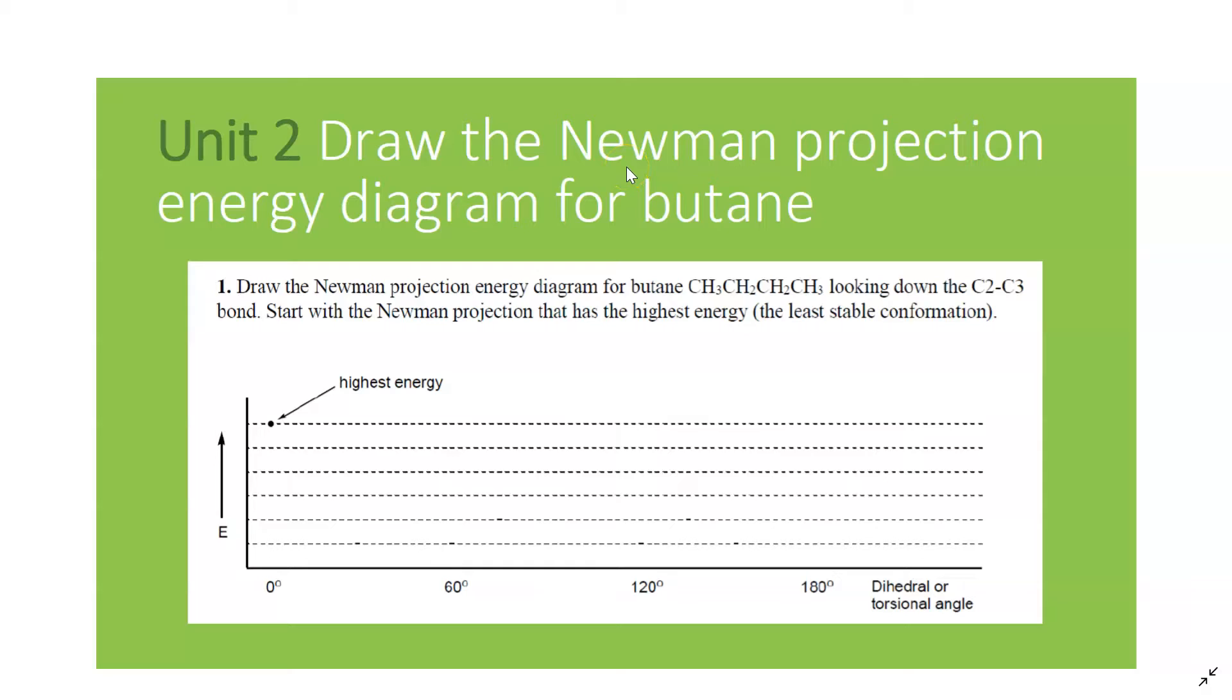Hi everyone. At this point in your understanding of Newman projections, hopefully you are comfortable going from a wedge-dash drawing to a Newman projection, showing either a staggered conformation or an eclipsed conformation. And if you practice with your molecular models, you're able to view a molecule like ethane from the side and then turn it so you're looking down the C-C bond. In this video, we will answer this problem concerning Newman projections. Draw the Newman projection energy diagram for butane, looking down the C2-C3 bond. Start with a Newman projection that has the highest energy, or otherwise known as the least stable conformation.